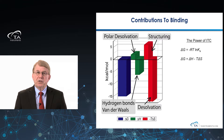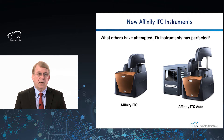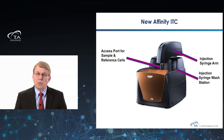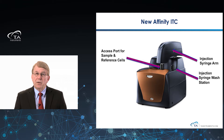The instruments we're introducing today are the Affinity ITC and Affinity ITC Auto. The manual version on the left-hand side has innovations I will talk about in later slides, and is fully upgradeable in the field to a fully automated system, the picture on the right-hand side. The Affinity ITC has an access port for the sample and reference cells, an injection syringe arm with automated functions not available on any other instrument, and a wash station with automated washing that can take place even on a manual instrument.